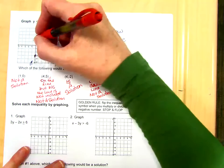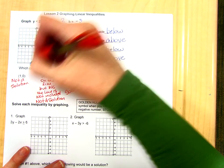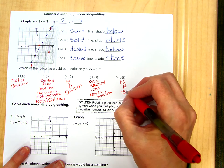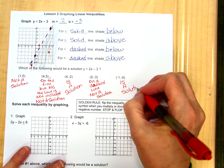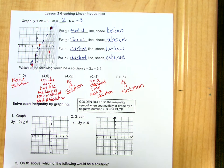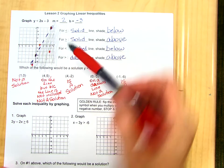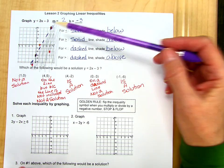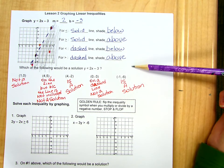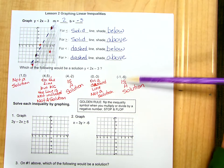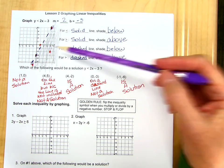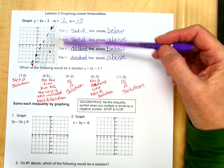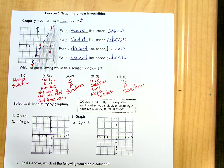Then we have negative 1, negative 6. Puts us right down into here. This one is in the shaded area, so it is a solution. So basically graph, shade, make sure that you have your line as either solid or dashed depending on what the inequality symbol tells you. Plot the points that you're asked to find, and then decide whether it is in the solution area or not in the solution area.